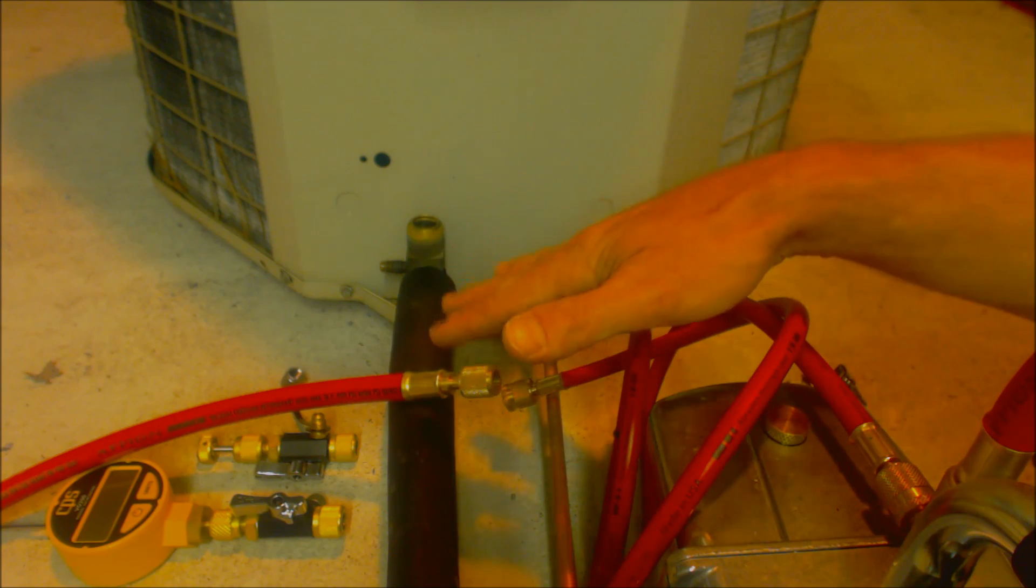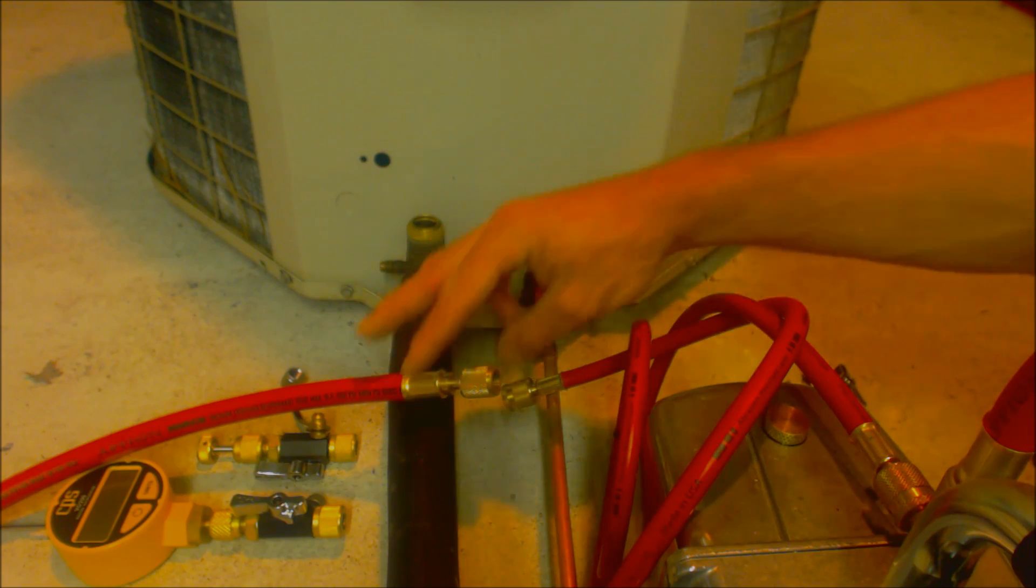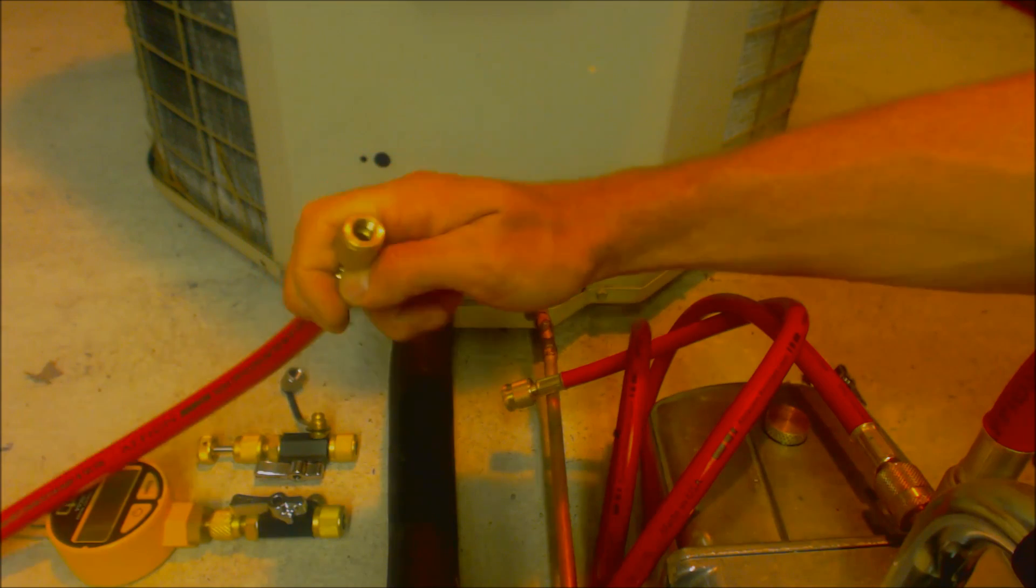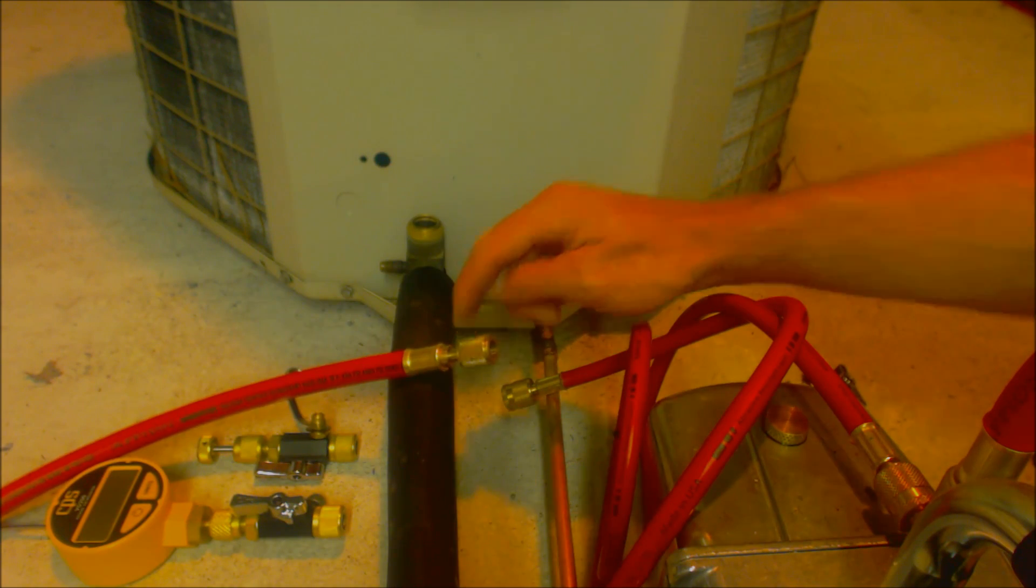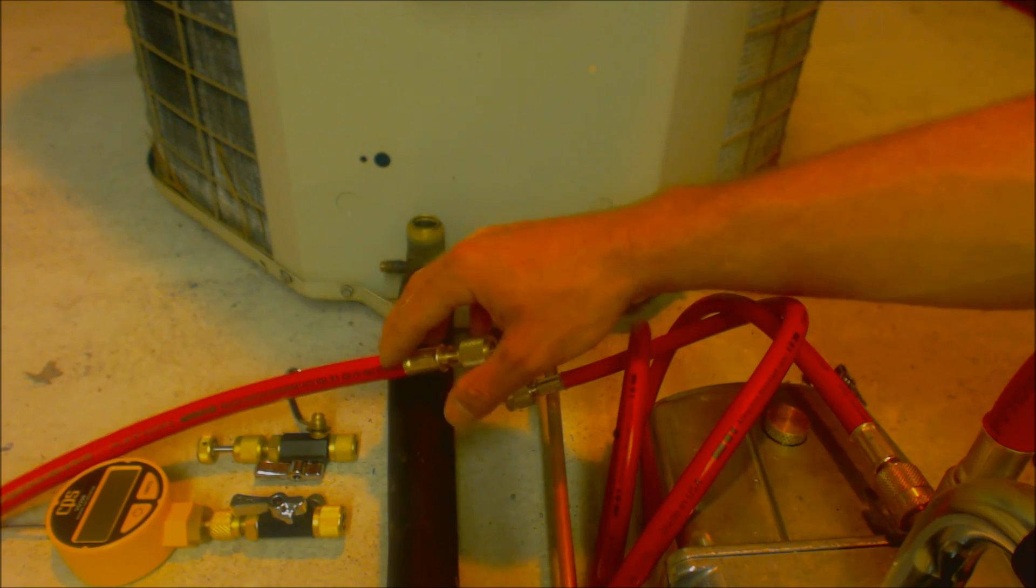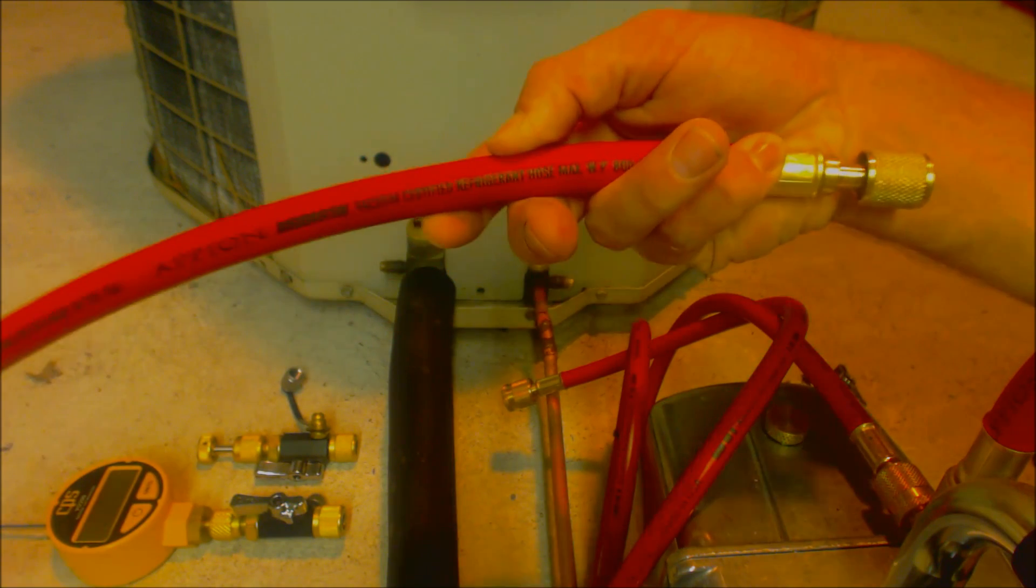The reason that we're not using a manifold gauge set is you have more potential for leaks, and I know in the past that's driven me a little crazy at times trying to find the one hose that might be leaking. You want to make sure that you have vacuum hoses that are rated for vacuuming. They're built a little differently than the normal service hoses that are rated for just pressure. These are actually for vacuum and it says vacuum certified on the refrigerant hose.